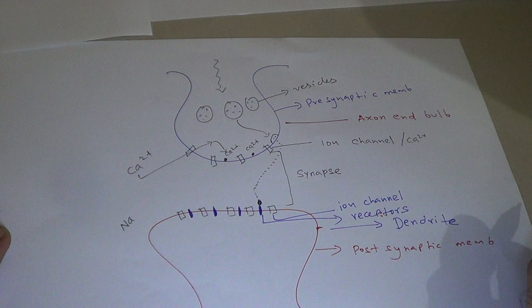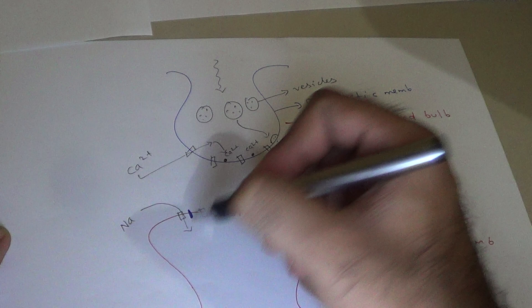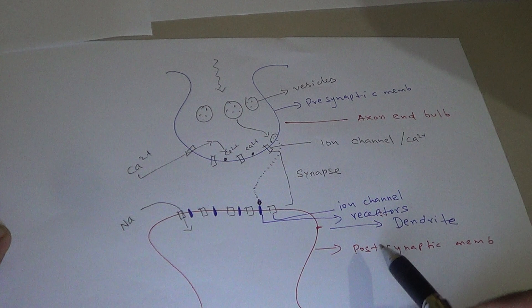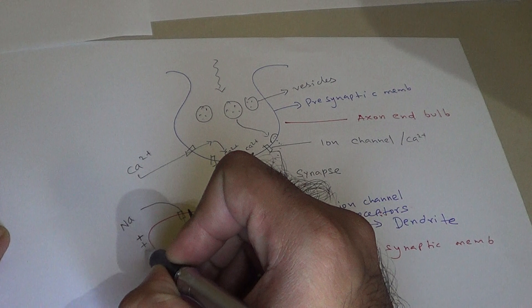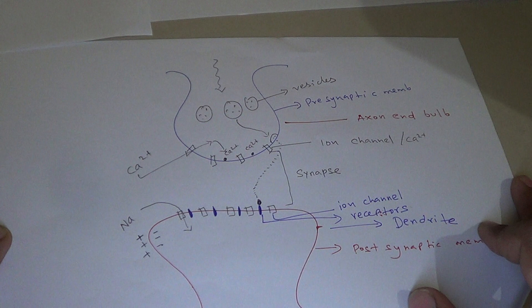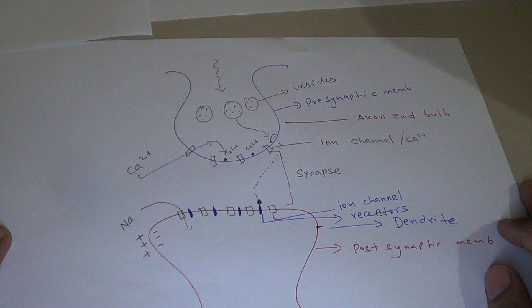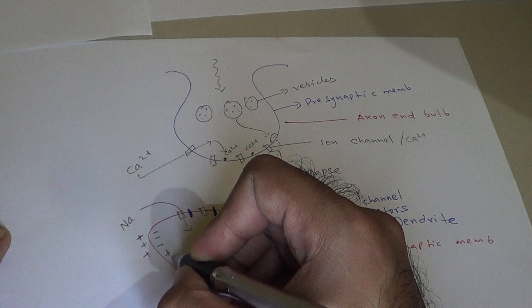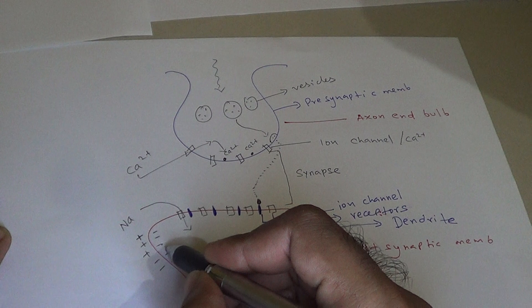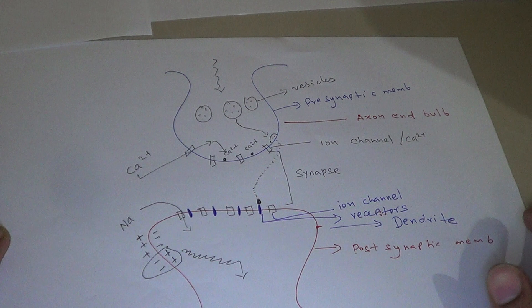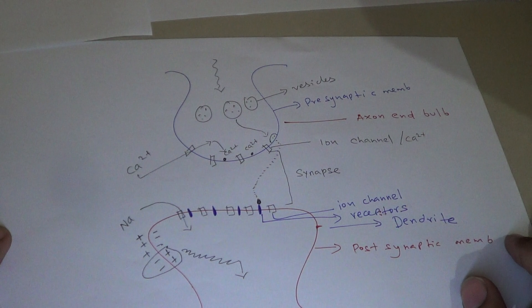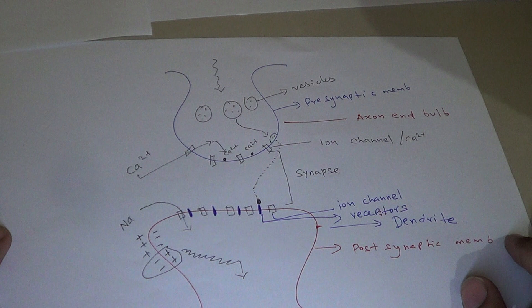After neurotransmitter binding at the postsynaptic membrane, sodium ions present outside move inside through the ion channels. Normally the charge on the postsynaptic membrane is positive outside and negative inside. When sodium ions enter after neurotransmitter-receptor binding, the inside becomes positive and the outside becomes negative. This change in charge causes depolarization, generating an impulse that is conducted forward to the next neuron.